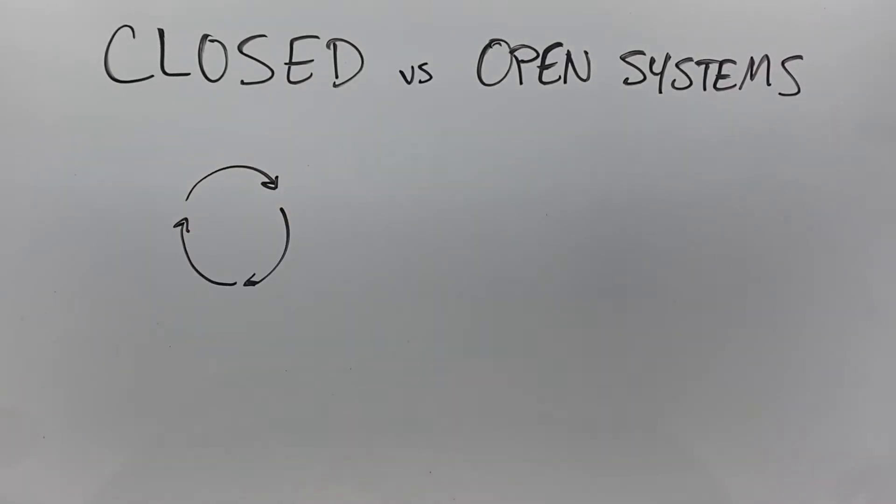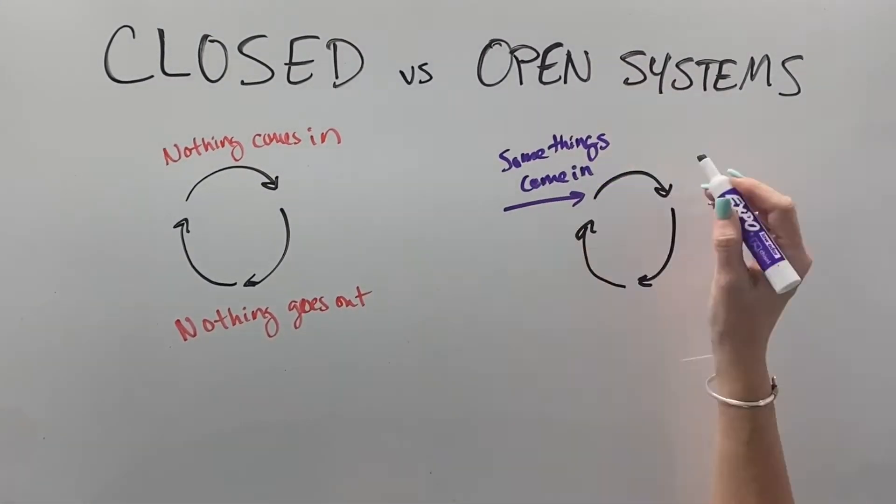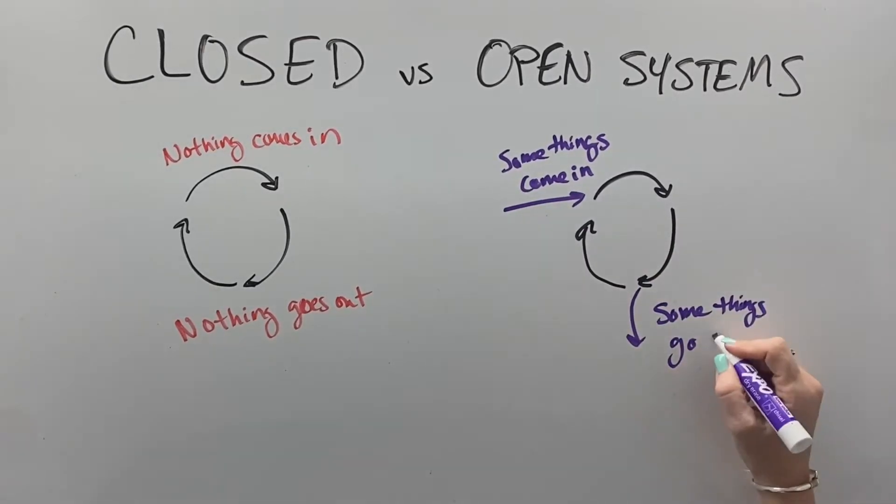I want to talk to you about open and closed systems. Closed systems are systems where things cycle around and around, nothing comes in, nothing goes out, everything just stays put. Open systems also go around and around, but some things come in and some things go out.